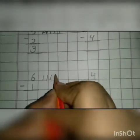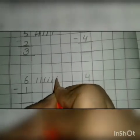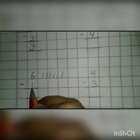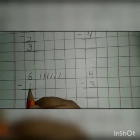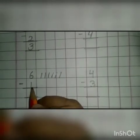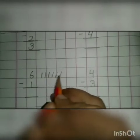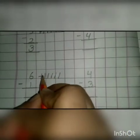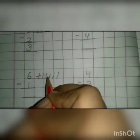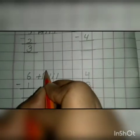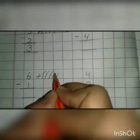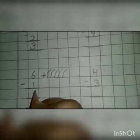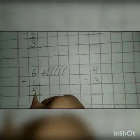Let's go to the next sum. And this is number 6. Now we will draw 6 lines: 1, 2, 3, 4, 5, 6. And this is number 1. Now we will take away 1 line from these lines: 1. Let's count how many lines are left: 1, 2, 3, 4, 5. Now we will write 5 here.